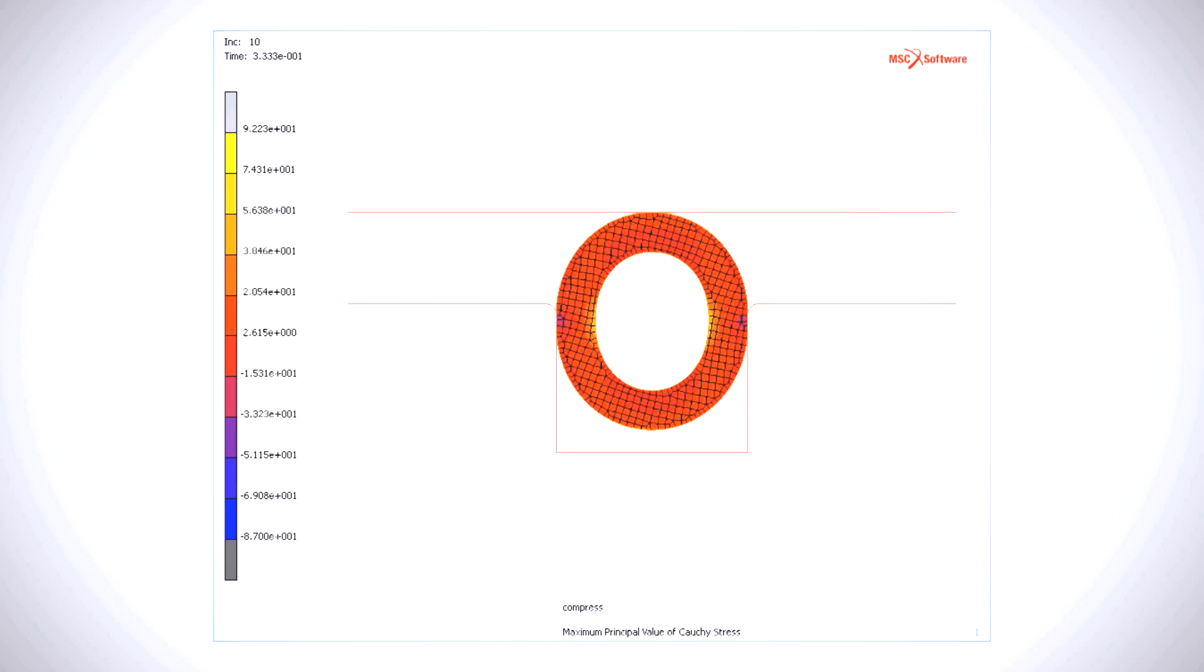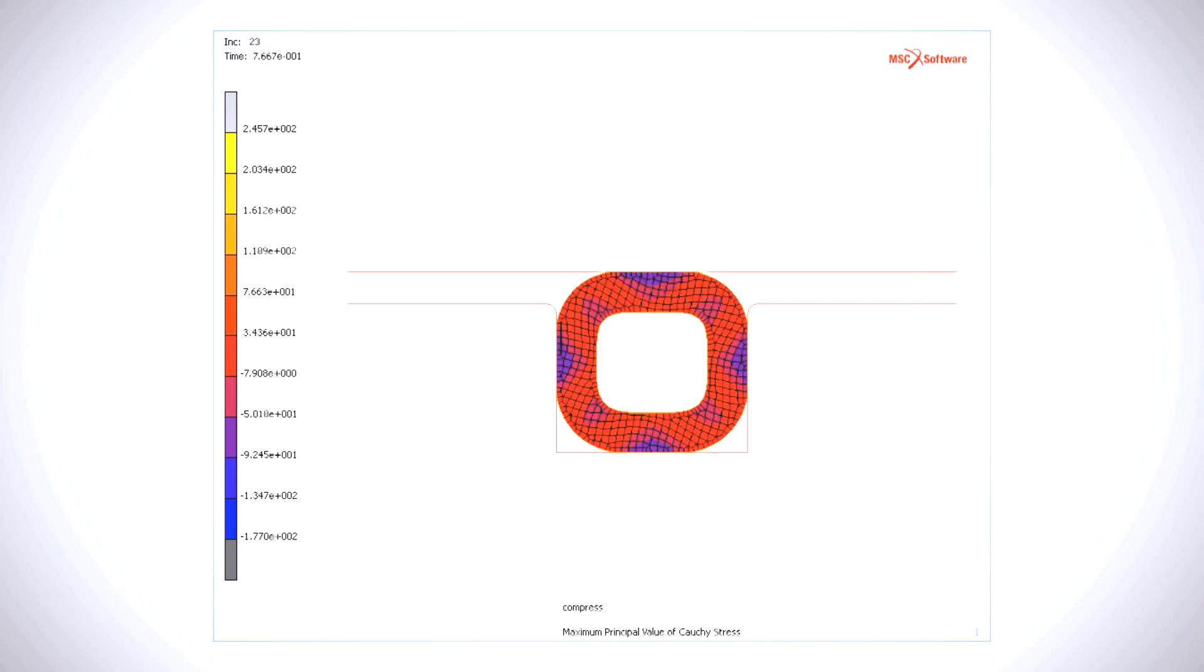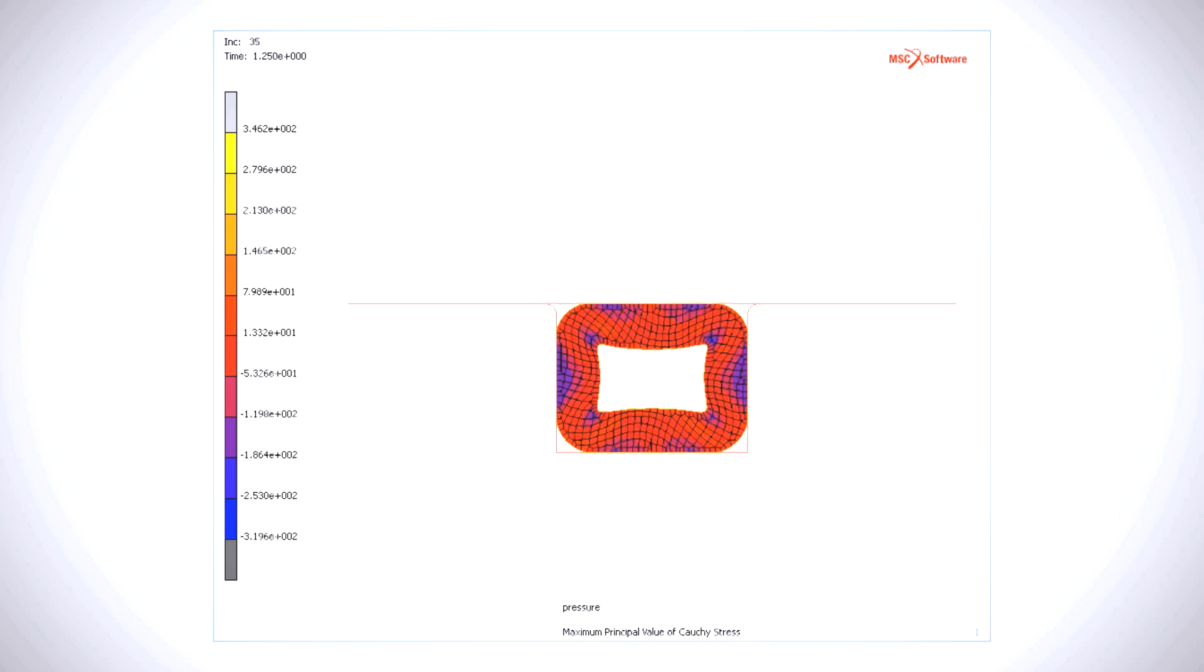Our O-rings are friction fit, meaning the groove is slightly undersized from the seal cross-section. Therefore, the O-rings are very easy to install.